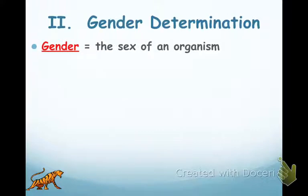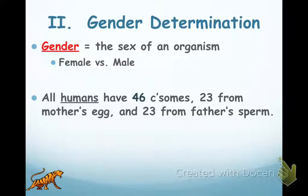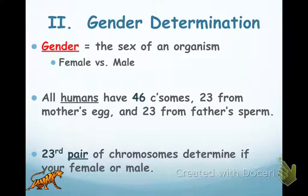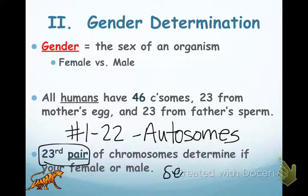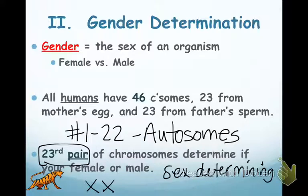So how do we determine gender? How do we know what the sex of the organism is? In humans we have male and female. We have 46 chromosomes — 23 come from mom and 23 come from dad. Pairs 1 through 22 are called autosomes. The 23rd pair of chromosomes are your sex-determining chromosomes. If you have XX, two X's, that's a female. An X and a Y for that 23rd pair is your male.